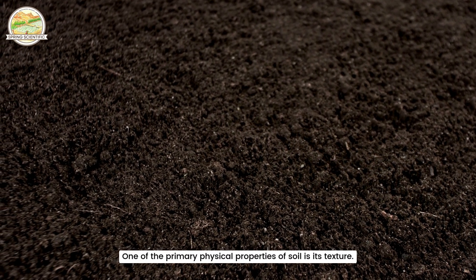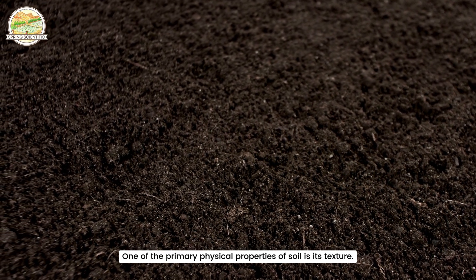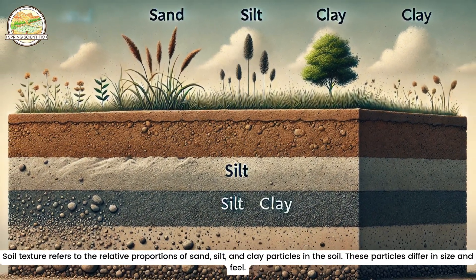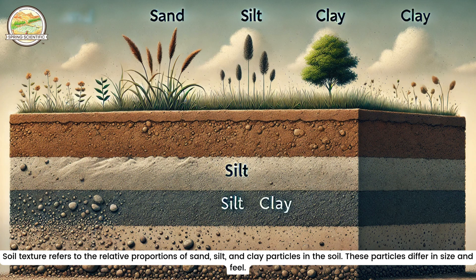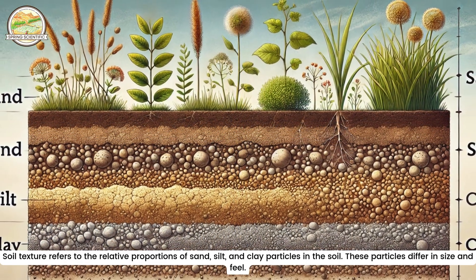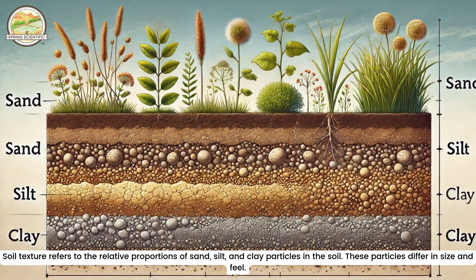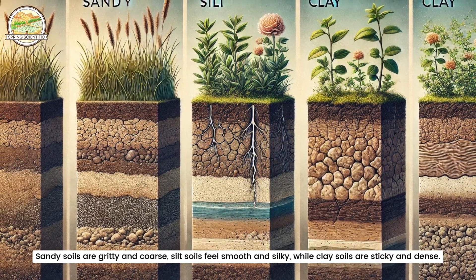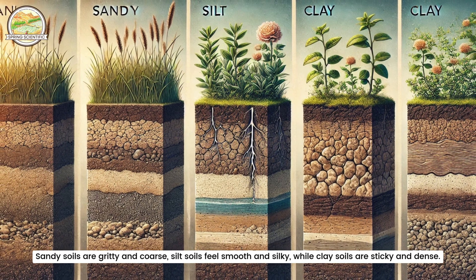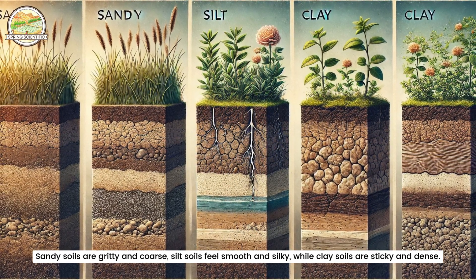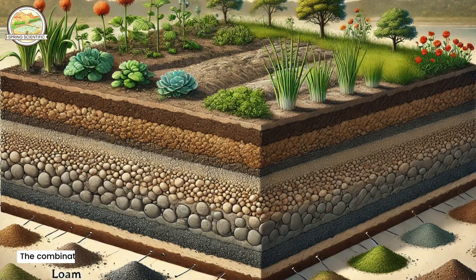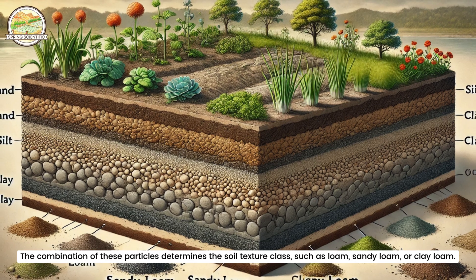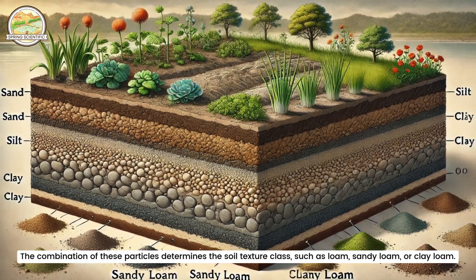One of the primary physical properties of soil is its texture. Soil texture refers to the relative proportions of sand, silt and clay particles in the soil. These particles differ in size and feel. Sandy soils are gritty and coarse, silt soils feel smooth and silky, while clay soils are sticky and dense. The combination of these particles determines the soil texture class, such as loam, sandy loam or clay loam.